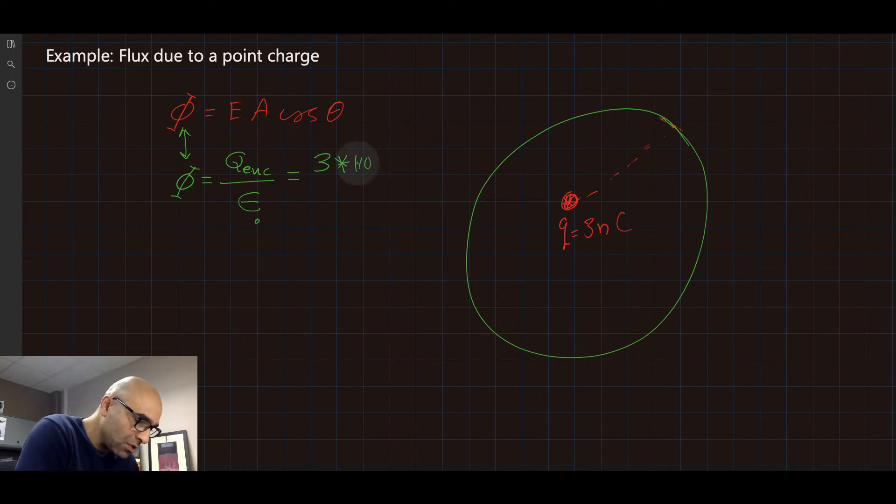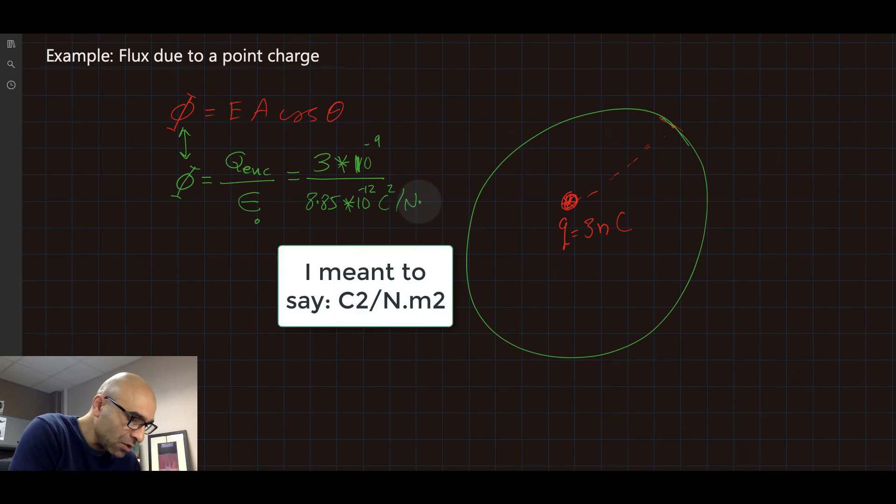3 times 10 to minus 9 divided by Epsilon zero. Epsilon zero is equal to 8.85 times 10 to minus 12 Coulomb squared per Newton meter, which is the permittivity for free space.